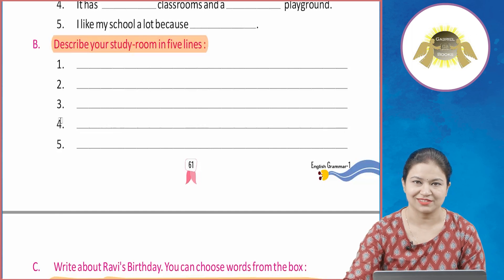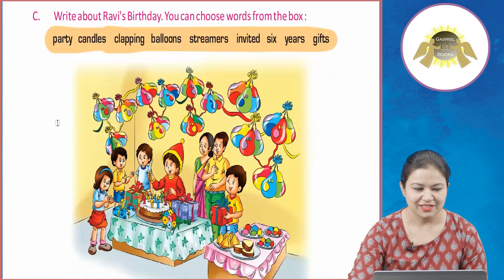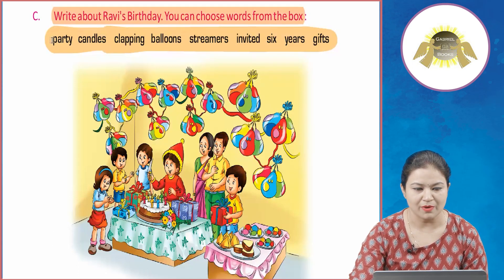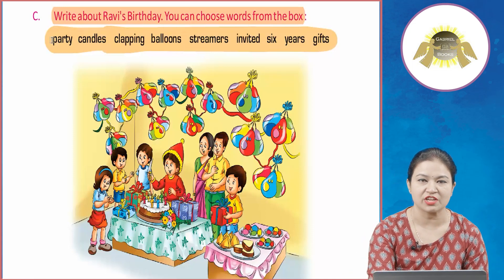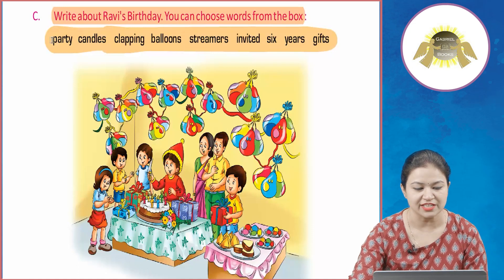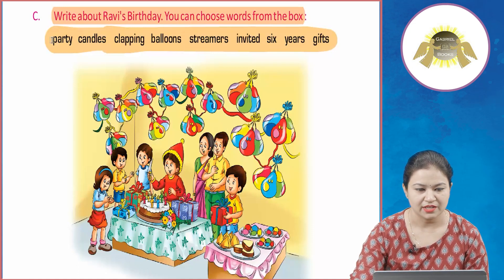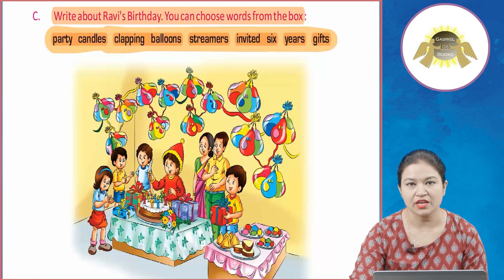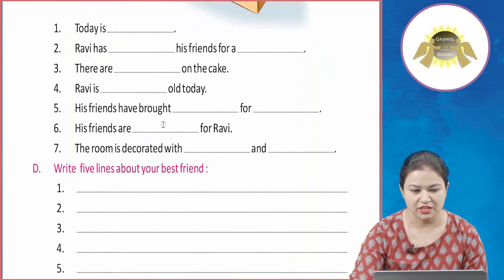Now write about Ravi's birthday — you can choose words from the box. Aaj Ravi ka birthday hai aur aapko word box diya gaya hai. Us mein se aapko words choose karke in sentences ko complete karna hai. Words in the box are: party, candles, clapping, balloons, streamers, invited, six years, gifts.